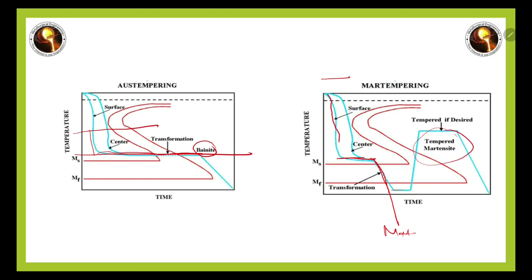So this is how you differentiate austempering and martempering: in austempering you get a fully bainitic structure, and in martempering you get a martensitic structure. Thank you so much.